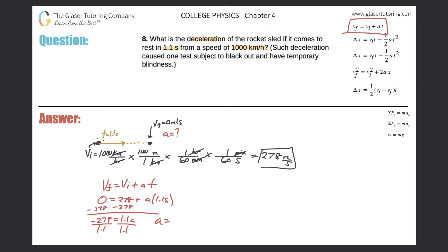So now my acceleration will be 278 divided by 1.1, and it is negative. So this is going to be negative 252. So this is negative 253, if I consider rounding. 253 meters per second squared.